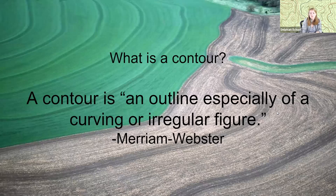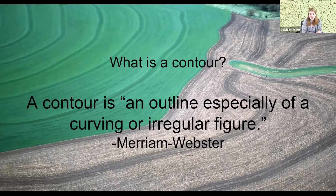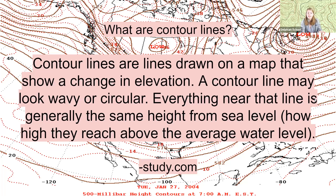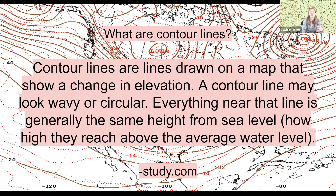There's another word we need to talk about: contour. A contour is an outline, especially of a curving or irregular figure. In maps, contour lines have a specific meaning — they are lines on a map that show a change in elevation. Elevation is how high up you are, and it's usually measured from how far above the sea you are.